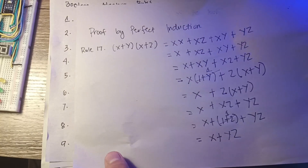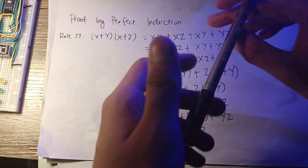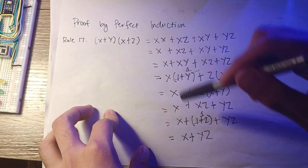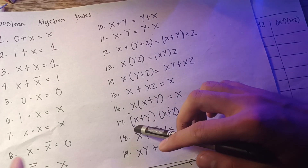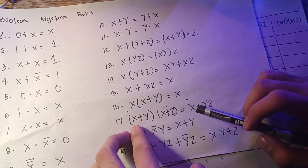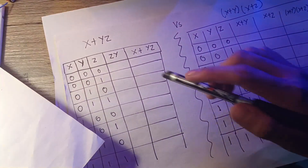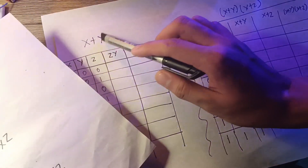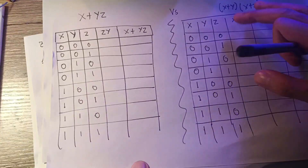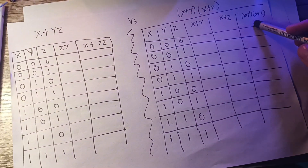To help you understand that both sides are equal, we will construct a truth table. I have a table here showing x plus yz on one side and (x+y)(x+z) on the other. We are going to fill this table out and check if the output of both expressions is the same.